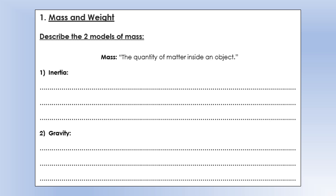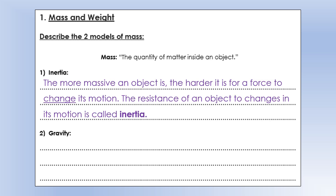The first area is what we call inertia. The more massive an object is - meaning if that object has more mass contained within it - the harder it is for a force to change its motion, whether that's changing its direction or changing the speed it's traveling at. The amount of resistance an object has to changes in its motion is what we call inertia, so more mass means more inertia.